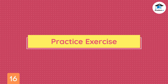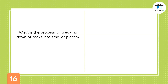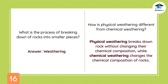Practice exercise. What is the process of breaking down of rocks into smaller pieces? The answer is weathering. How is physical weathering different from chemical weathering? Physical weathering breaks down rock without changing their chemical composition, while chemical weathering changes the chemical composition of rock.